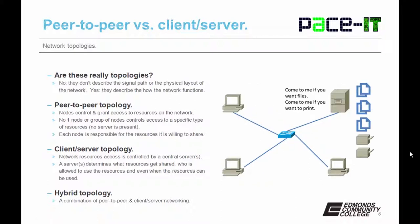A client-server topology differs. Network resource access is controlled by a central server or servers. A server determines what resources get shared, who is allowed to use those resources, and even when those resources can be used. In the small office or home office, it's common to find a hybrid topology — a combination of peer-to-peer and client-server networking.